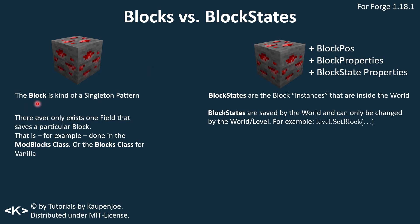The general idea is that the block class in itself is a singleton pattern. It basically means that we have one field for one particular block. When we go into our ModBlocks class, or into our Blocks class in Vanilla, we can see that for the redstone ore block we create one field, and that is always going to be the only place where we create this new redstone ore block. We can have a different variant, but overall we only create one field for a block.